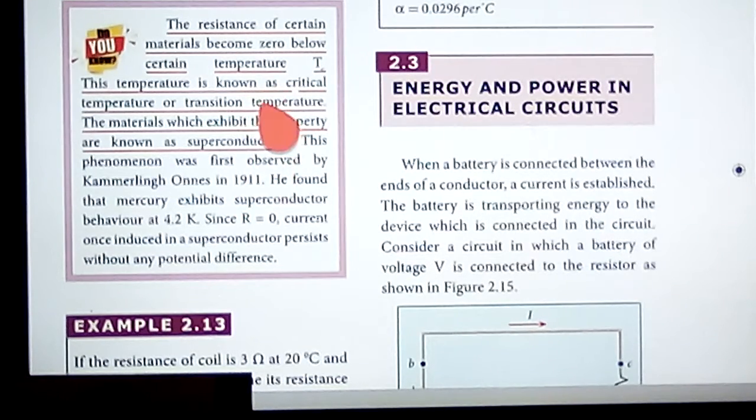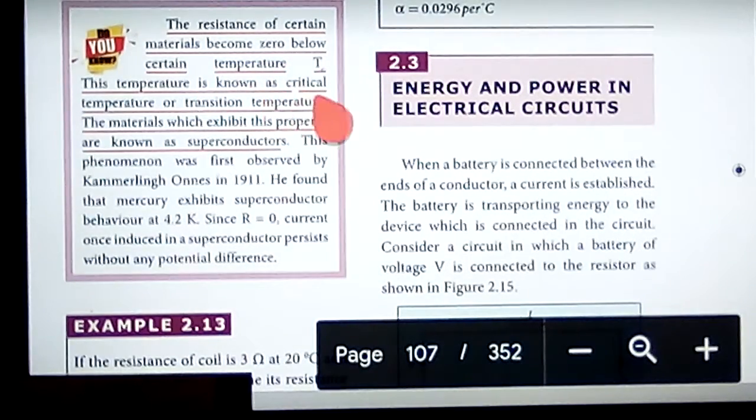Let us see what happens here. The resistance of certain materials becomes zero below a certain temperature Tc. This temperature Tc is called critical temperature or transition temperature.